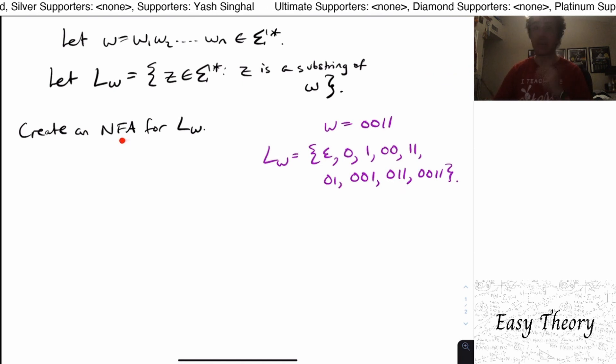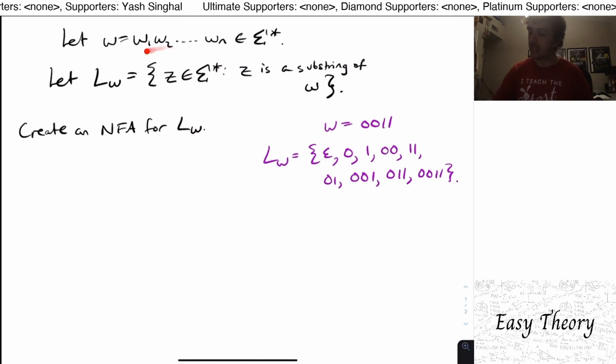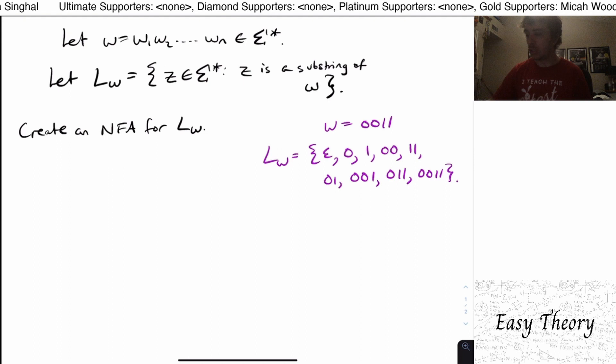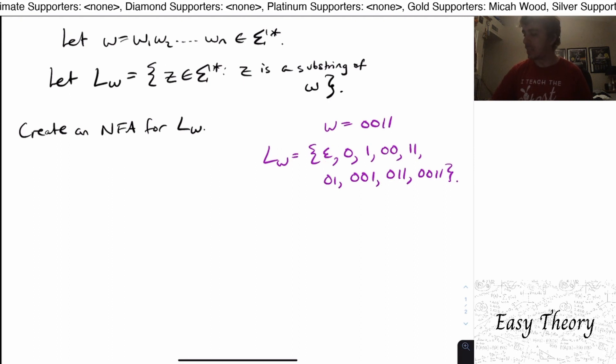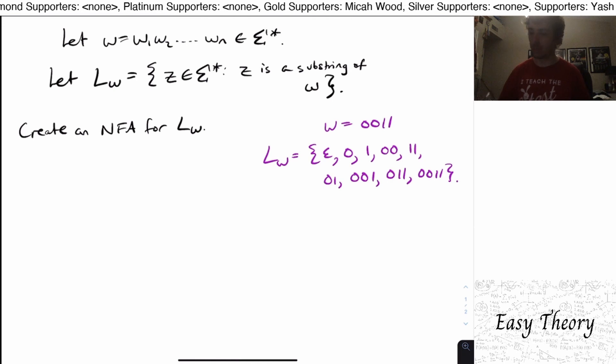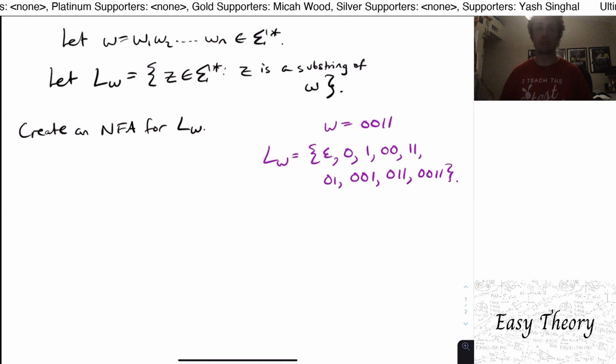So then now what we need to do is make an NFA for this language. So note that since the string is finite, this language is finite, so you can always make an NFA for it. And what you could do is just make an NFA for each of these individual strings, and then union all of them together, and you could achieve it that way. So that's one way you can go. But there was something that we thought of during the live stream that I think was actually really interesting.